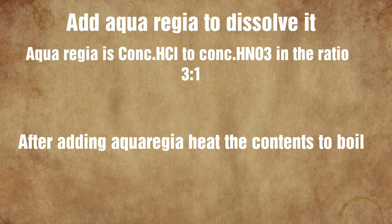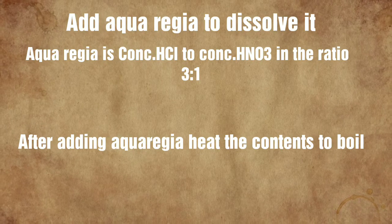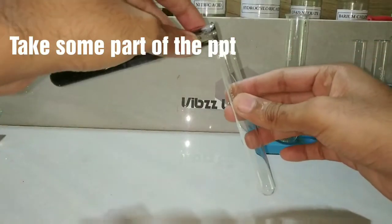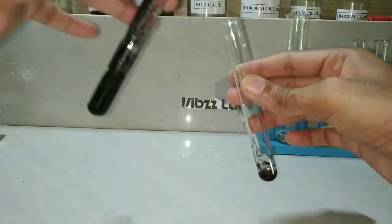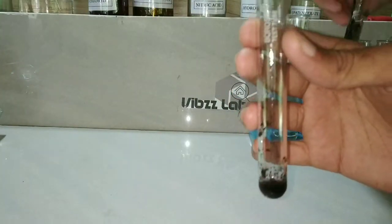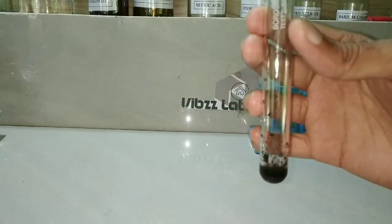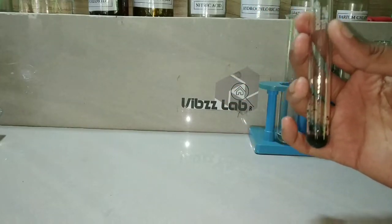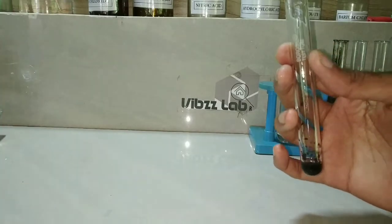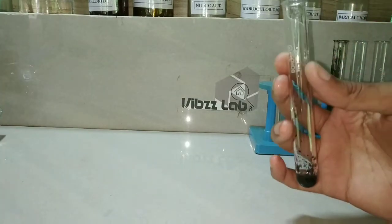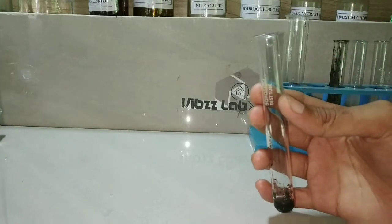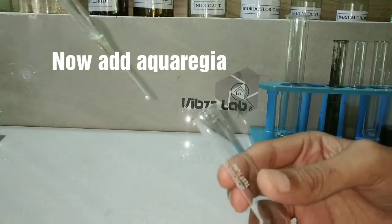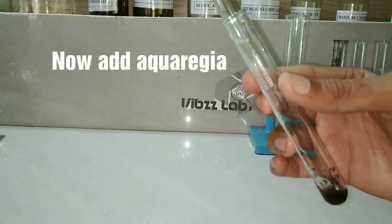The black precipitate is now dissolved in aqua regia, which is a combination of concentrated hydrochloric acid and nitric acid in the ratio 3:1. We take some part of the precipitate in a test tube. Care should be taken while handling aqua regia as it is a mixture of two concentrated acids. Use a dropper to add the aqua regia into the precipitate.